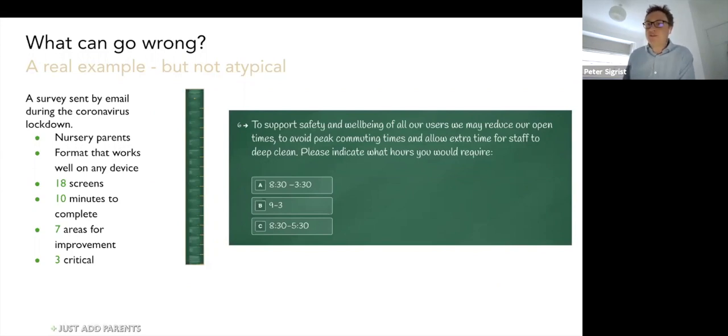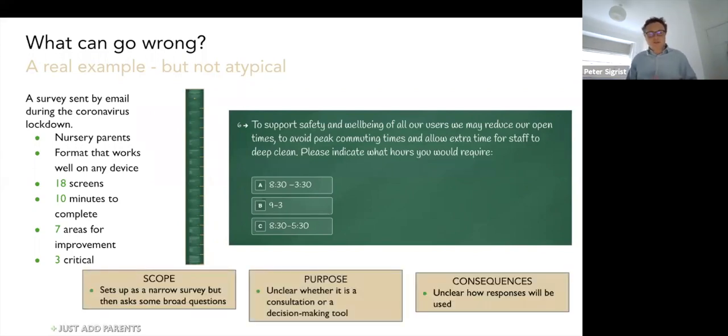Just summarizing all of that: We think the survey sets up an excessively narrow scope and then asks some broader questions, and that jeopardizes its success. The purpose is unclear. It's very unclear whether this is a consultation to gauge opinion. It doesn't look like that in places, and then questions like this suddenly make you realize, 'Oh no, is this—if I answer C here, does that mean I can't get a later time?' You're not sure whether it's a decision-making tool.